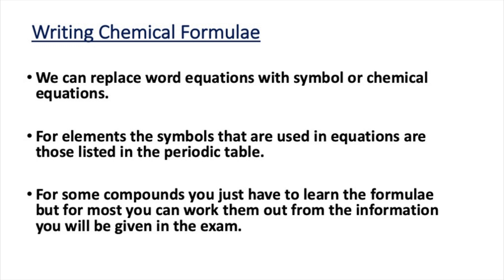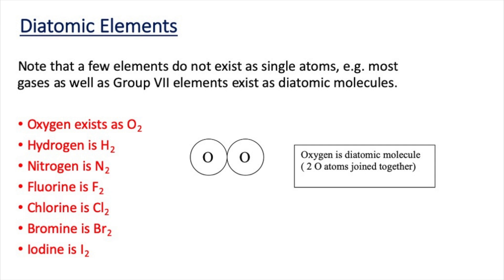For the vast majority of compounds at GCSE you're able to work out the chemical formula using information given to you, though there are a few compounds we recommend you learn. Before discussing that, we need to look at elements that are diatomic. Although the majority of elements are made up of single atoms, a few elements are diatomic — in other words they're made up of molecules with pairs of atoms joined together.